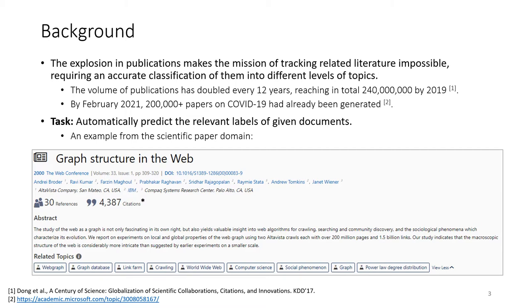Second, by February 2021, more than 200,000 papers on COVID-19 had already been generated. So the explosion in publications makes the mission of tracking related literature impossible, requiring an accurate classification of them into different levels of topics. Therefore, the task of this paper is to automatically predict the relevant labels of given documents.